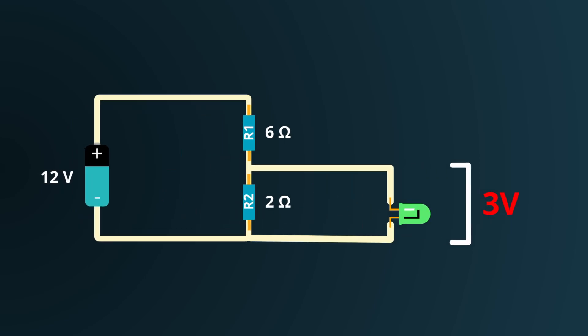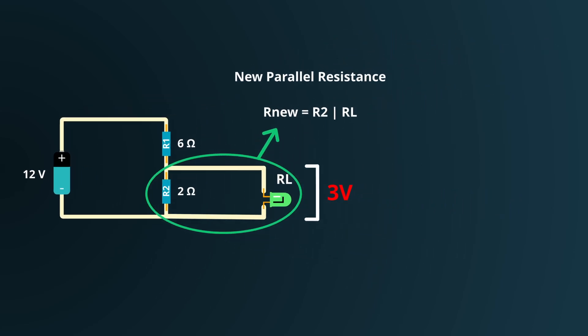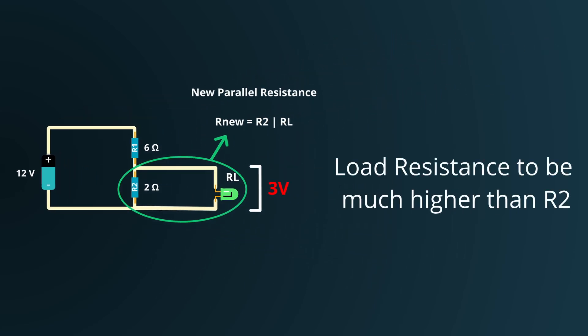However, before we celebrate too much thinking we have cracked the code, there's a practical aspect we haven't touched upon yet—something we have to be careful with—that is the resistance of the load. In this case, our LED. When we use a voltage divider to supply a load like an LED, that load isn't just a passive recipient of the voltage. The load itself has inherent resistance. Now you might be wondering, why does that matter? Well, when you connect the LED to the voltage divider's tap node, it effectively becomes a part of the circuit. The LED's resistance, combined with the resistors, changes the dynamic of the voltage division.